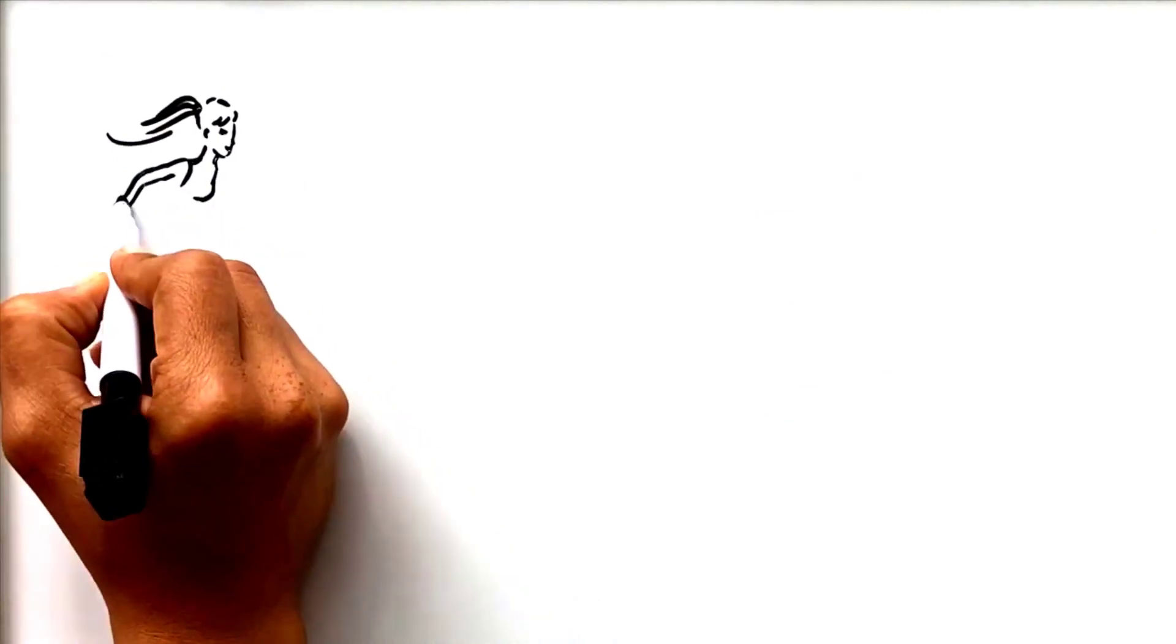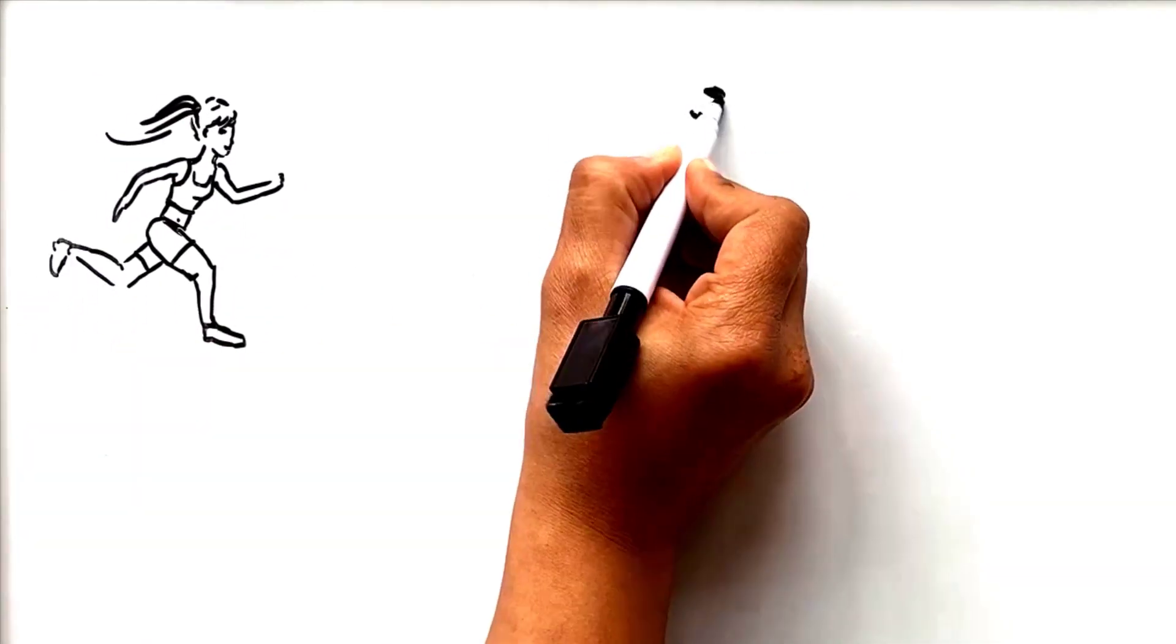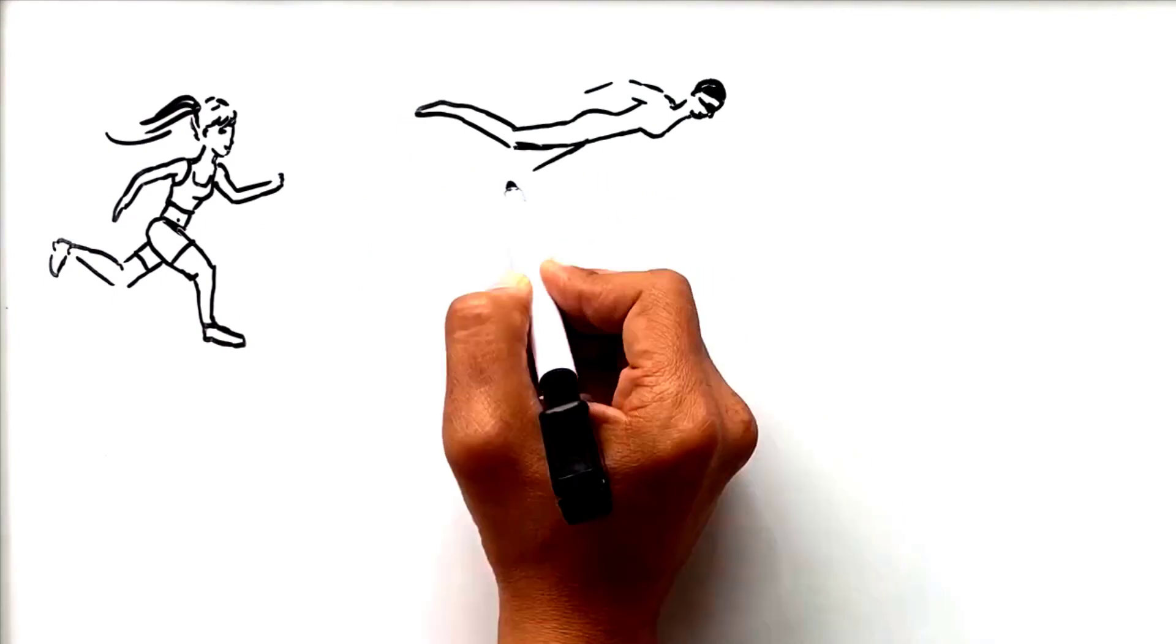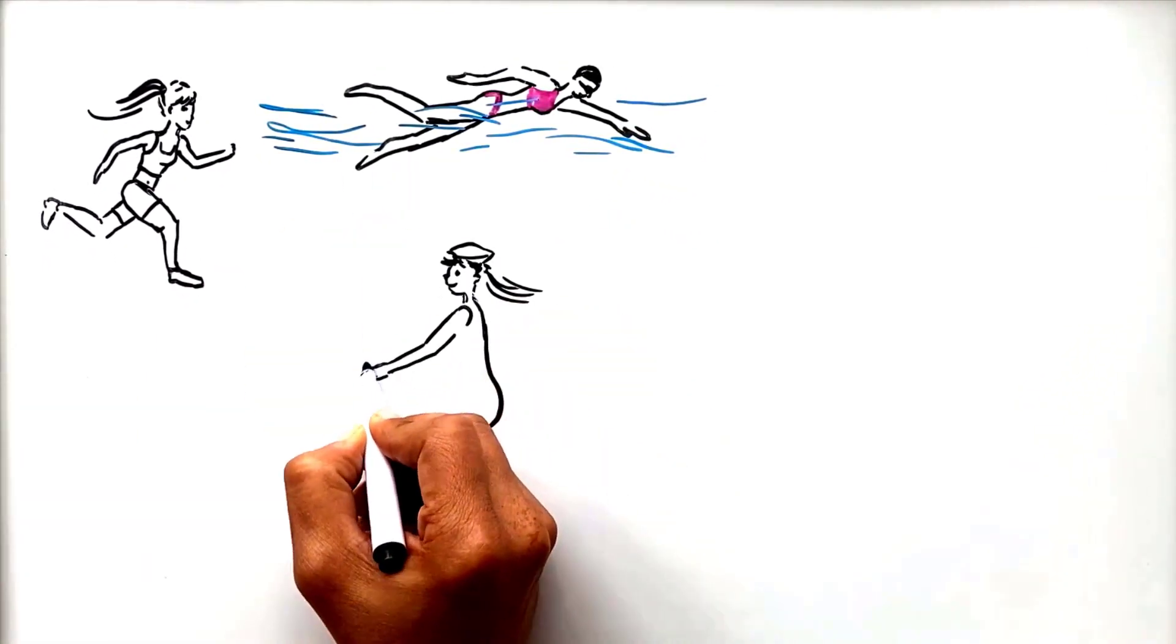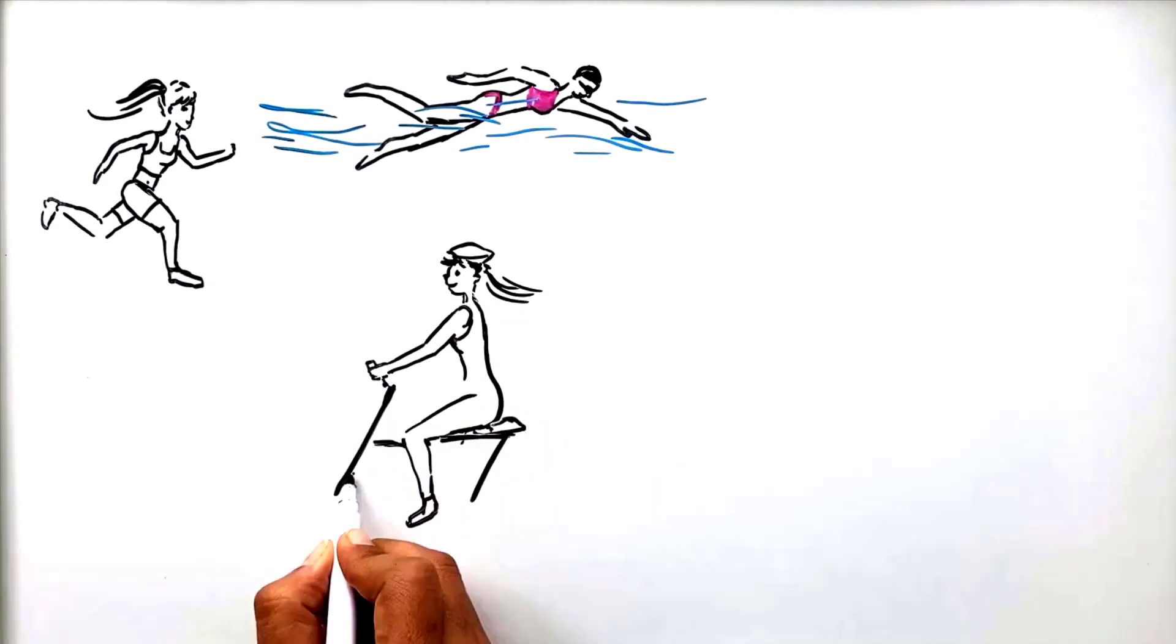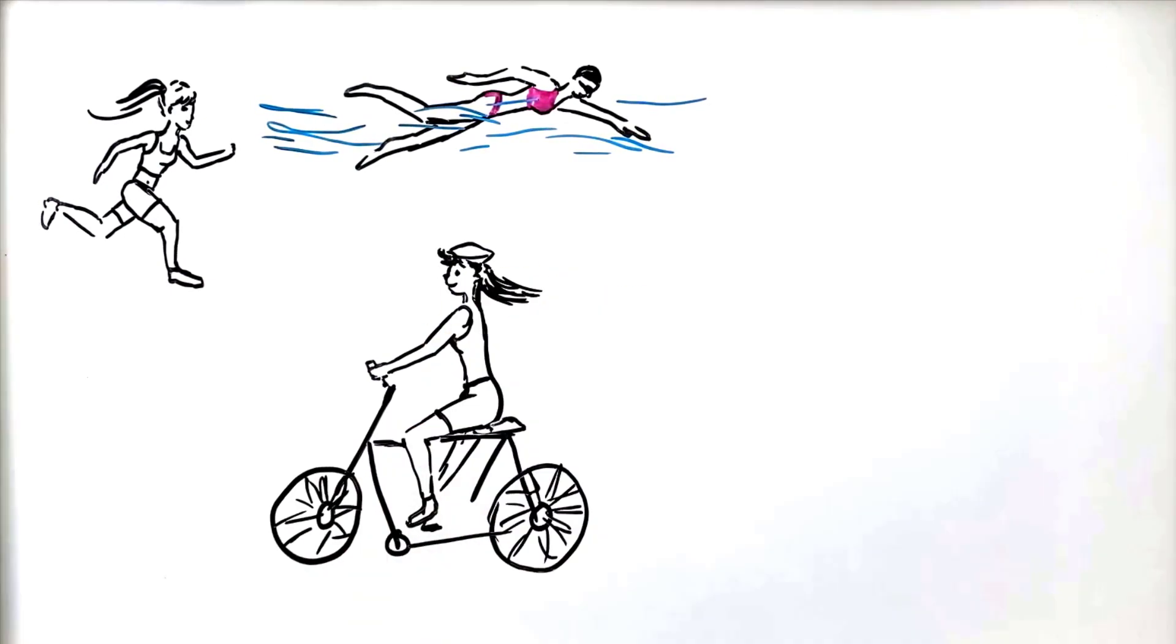Number 2: Aerobic training. If you had to pick one thing to make yourself healthier as you age, it would have to be aerobic exercise. Running, swimming, cycling, and other endurance exercise can slow cellular aging.